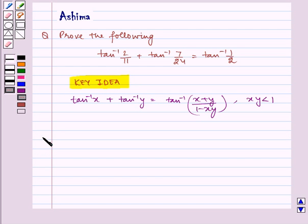Now let us proceed with the solution. Here given to us that x is equal to 2 by 11 and y is equal to 7 by 24. Now consider LHS.